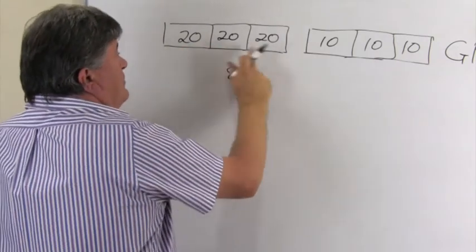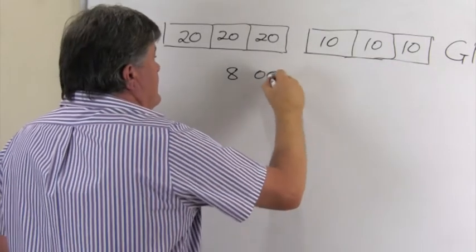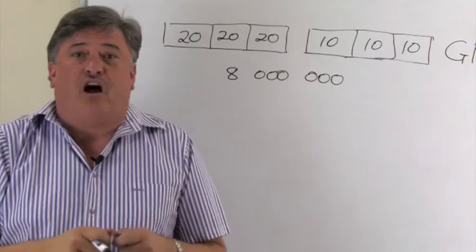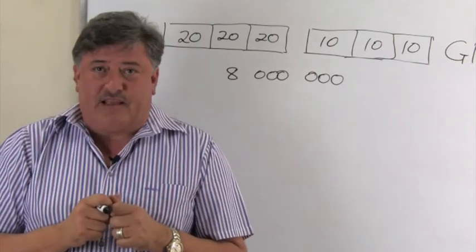Now the easy way to multiply is to multiply two times two times two, which is eight. One, two, three, four, five, six zeros. So that means there are a possible of eight million number plates.